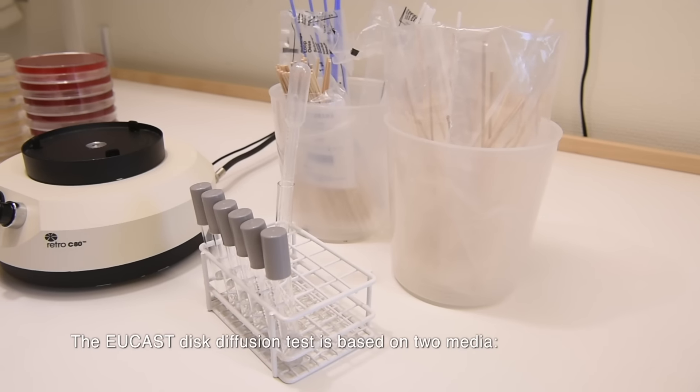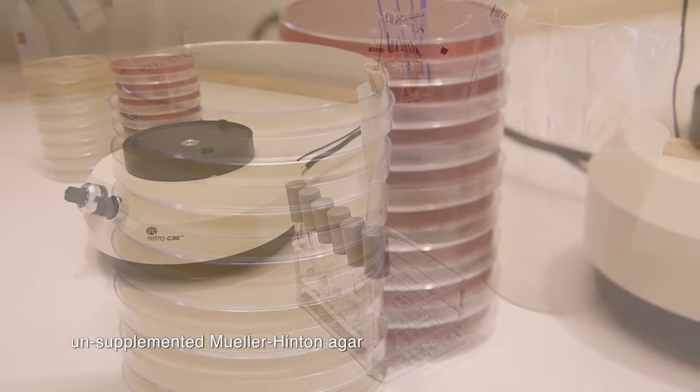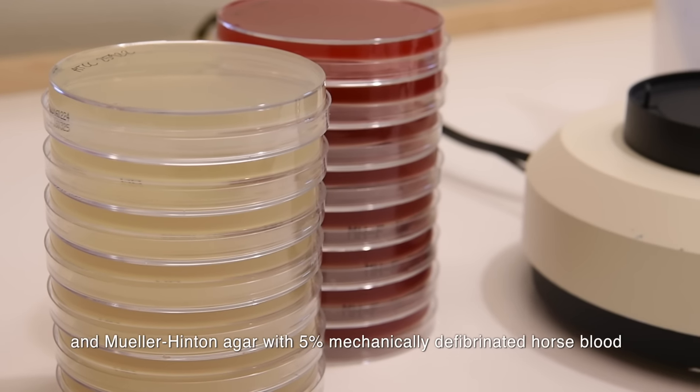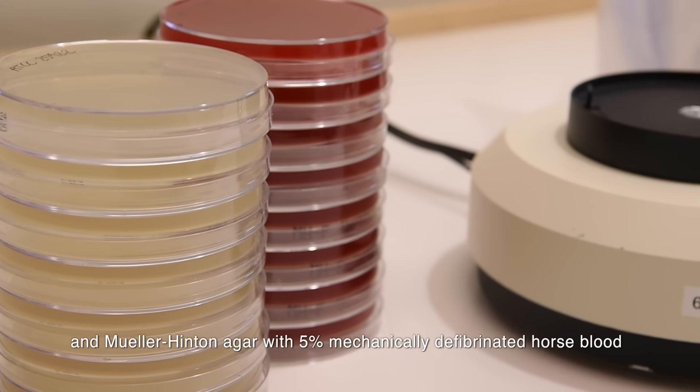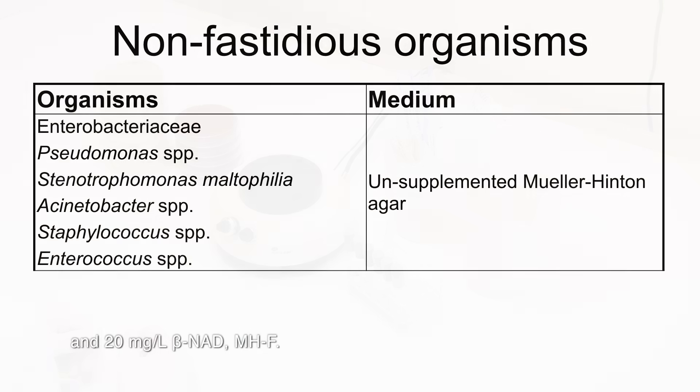The UCAS disc diffusion test is based on two media: unsupplemented Mueller-Hinton agar and Mueller-Hinton agar with 5% mechanically defibrinated horse blood and 20 mg per liter of beta-NAD. This medium is called MHF.